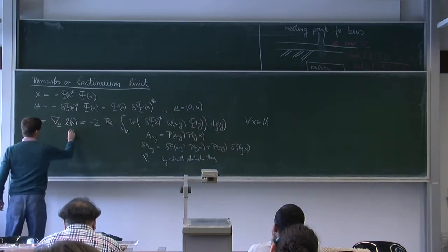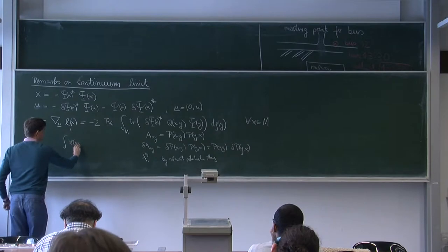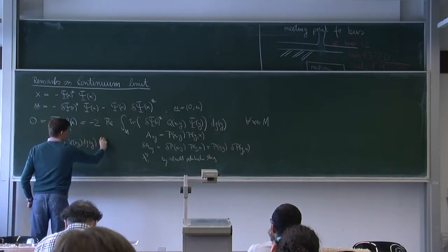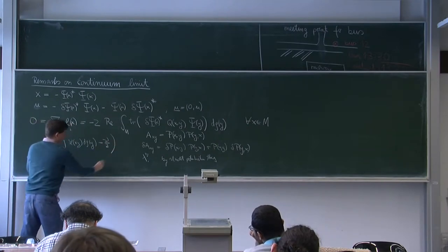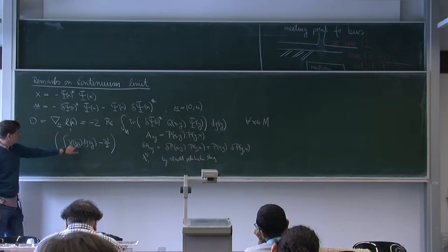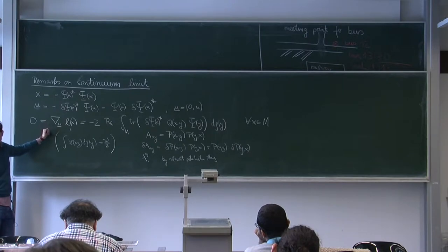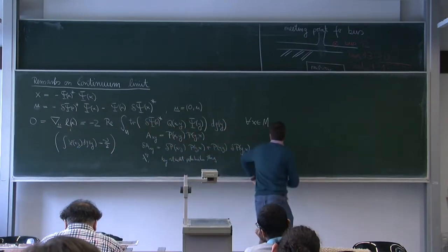You can also compute a variation of the Lagrangian. So this l(x,y) is like the integral of l(x,y) d rho y minus a certain constant. If you know how the eigenvalues change, then you can compute the variation of the Lagrangian, and this is what comes up here. Just to explain the structure.